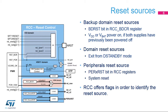STM32H7 X3, X5, and X7 devices embed two oscillators for use with an external crystal or resonator: a high-speed external 4 to 48 MHz oscillator (HSE) with a clock security system, and a low-speed external 32.768 kHz oscillator (LSE), also with a clock security system. The device also embeds three phase-locked loops, each with three independent outputs for clocking different peripherals at different frequencies.